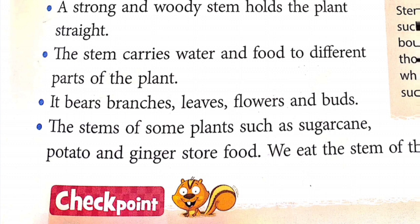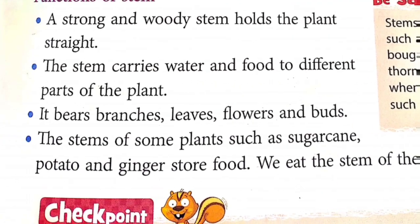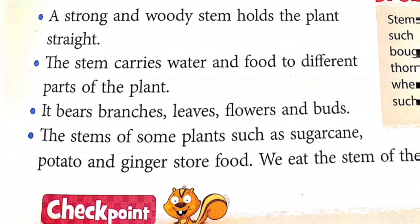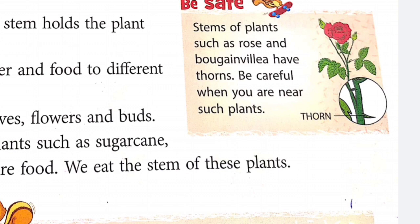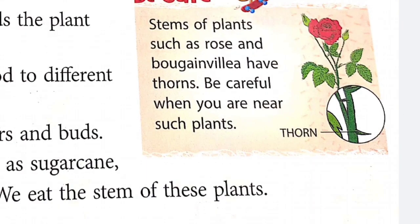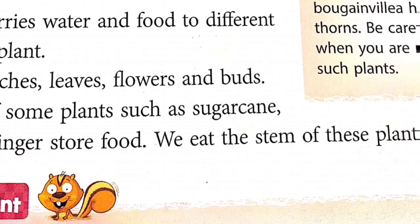The stem of some plants such as sugarcane, potato, and ginger stores food. We eat these stems because they store food and are rich in minerals. Also, stems of plants such as rose and bougainvillea have thorns, so be careful when you are near such plants because you can get hurt.